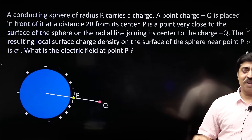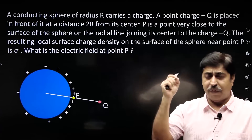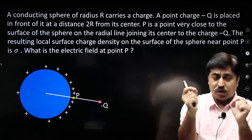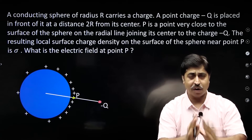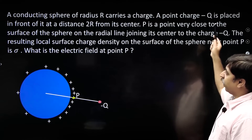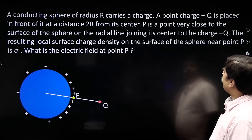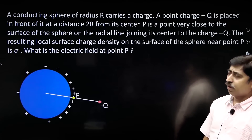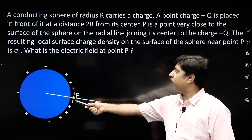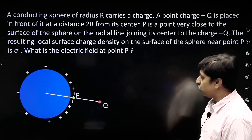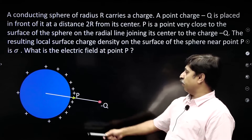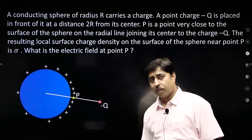Hello students. Through this particular question you will be able to learn a very key concept in electrostatics — a very important concept which most of you have misunderstood during your regular studies. The question says there is a conducting sphere of radius r and it carries a charge. A point charge minus q is placed in front of it at a distance of 2r from its centre. P is a point very close to the surface of the sphere on the radial line joining its centre to charge minus q.